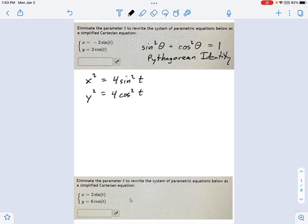4 sine squared t and y squared equals 4 cosine squared t. Okay, and now I can rewrite those things down here. That's x squared over 4 equals sine squared t and y squared over 4 equals cosine squared t.